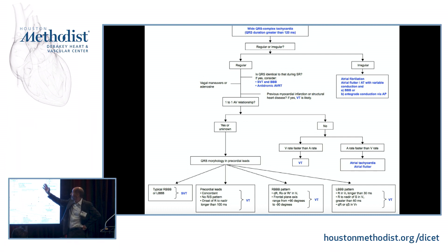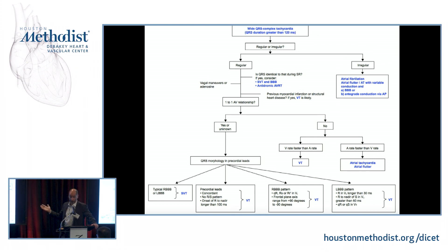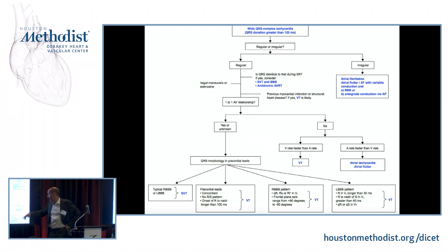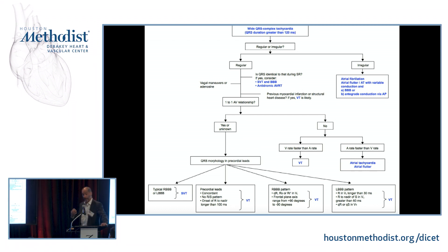When approaching wide complex tachycardia, first assess whether it is regular or irregular. If irregular, think of AFib with aberrancy or with an accessory pathway. If regular, compare with the baseline EKG — if sinus looks exactly the same, it is probably aberrancy. If there is an accessory pathway on baseline, think of antidromic AVRT. Then look for P waves and discern the AV relationship. AV dissociation confirms VT, especially when the ventricular rate is faster than the atrial rate.